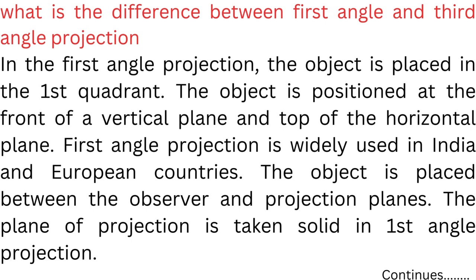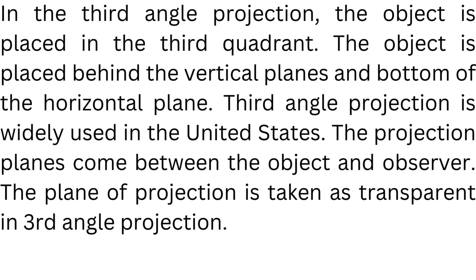What is the difference between first angle and third angle projection? In first angle projection, the object is placed in the first quadrant — in front of a vertical plane and on top of the horizontal plane. It is widely used in India and European countries, and the plane of projection is taken as solid. In third angle projection, the object is placed in the third quadrant, between the vertical planes and below the horizontal plane. It is widely used in the United States, and the plane of projection is taken as transparent.